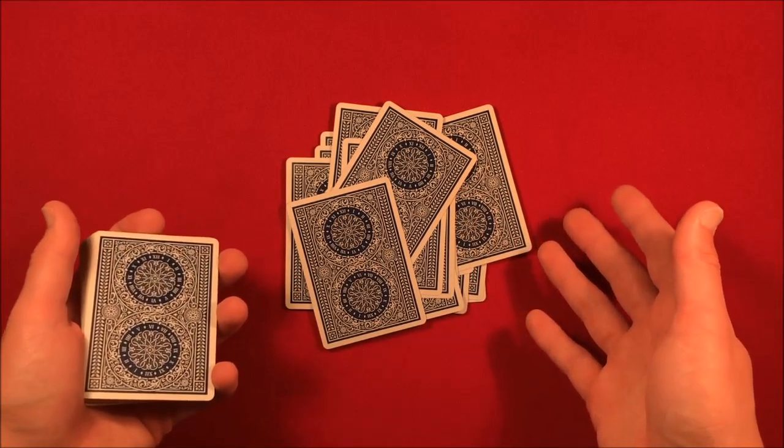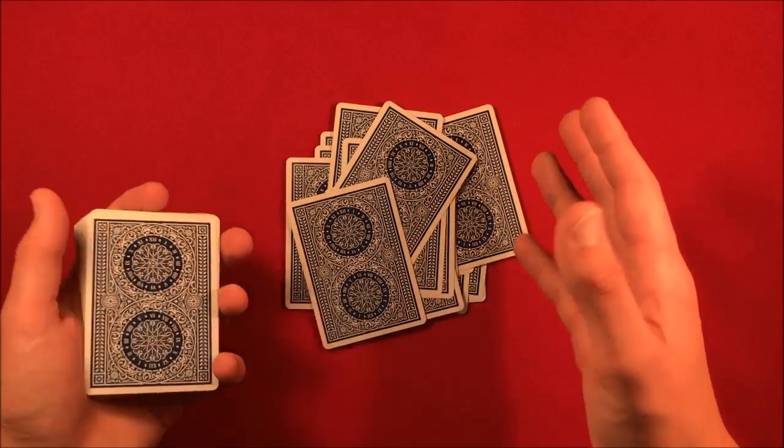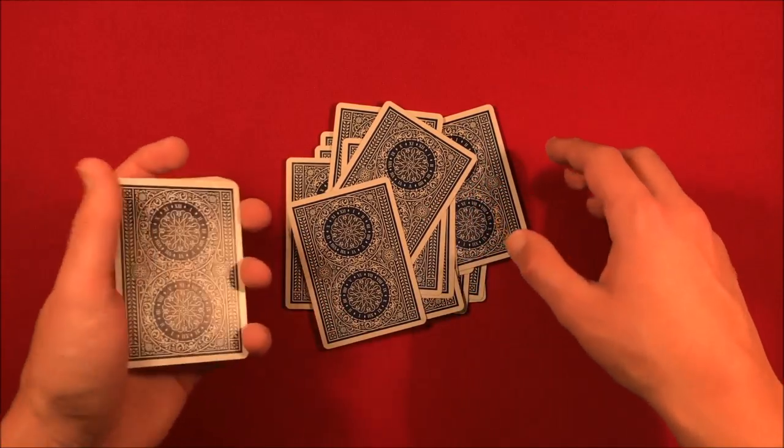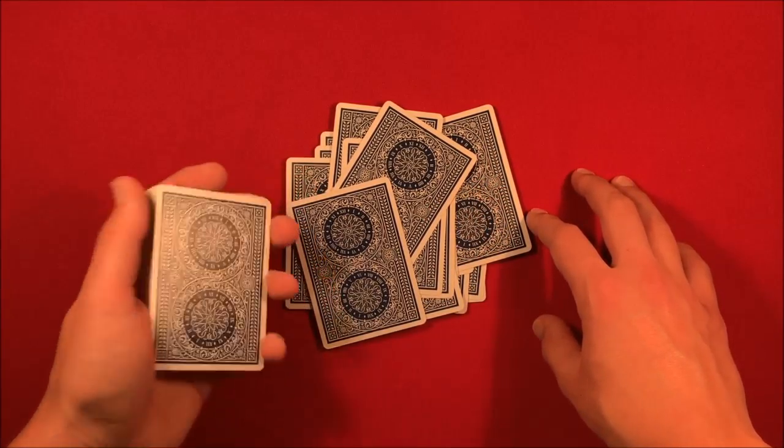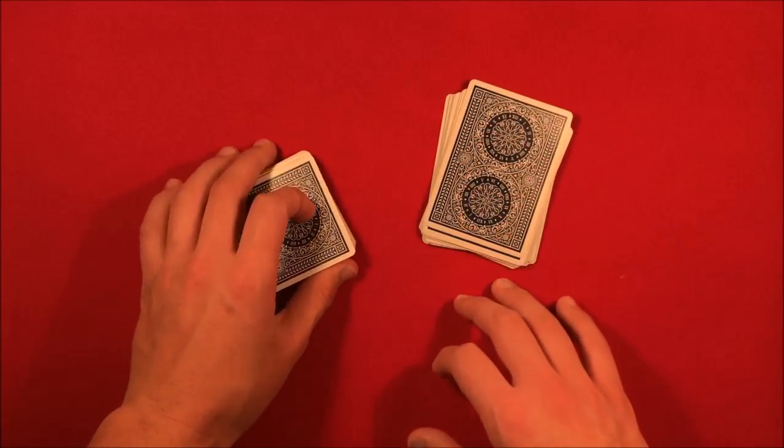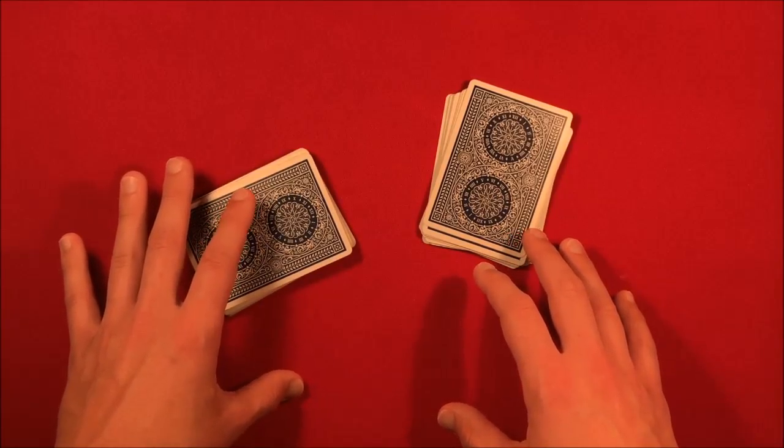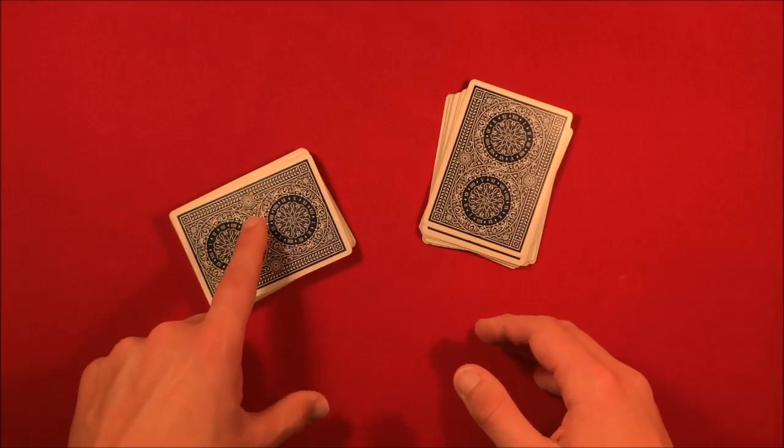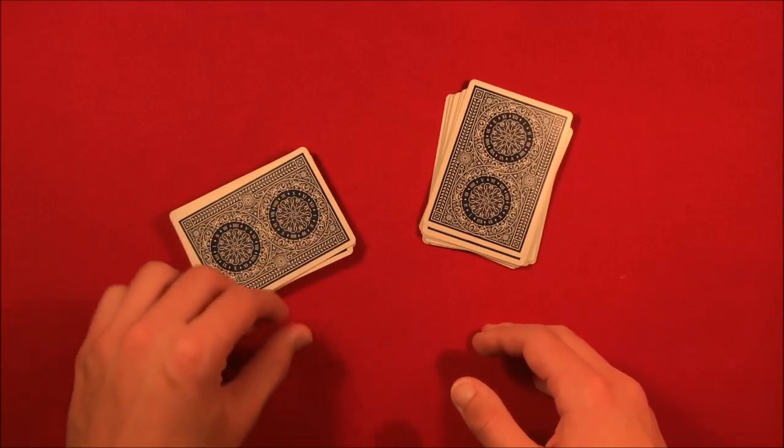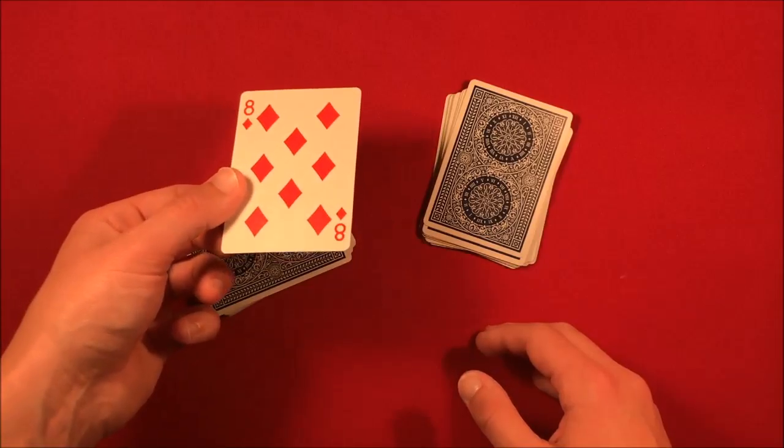Is you can misdirect the spectators and you're going to tell them they could have stopped you anywhere they wanted to in the deck. And as you're talking to them, all you have to do is flip your left hand over real casually and square up this packet of cards. That gives you the reason or the opportunity to flip over this deck unnoticed. So you put this on the table and you say, look, the next card is going to be the eight of diamonds. You can flip this over and show that to them, and this is pretty much the end of the trick.